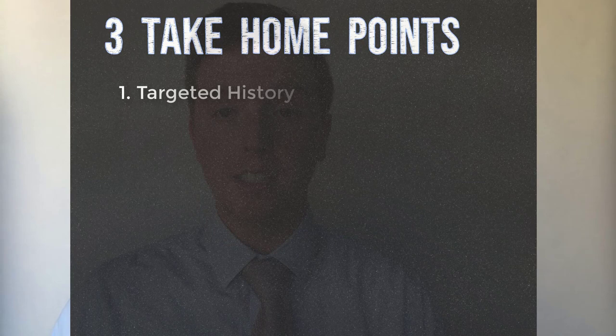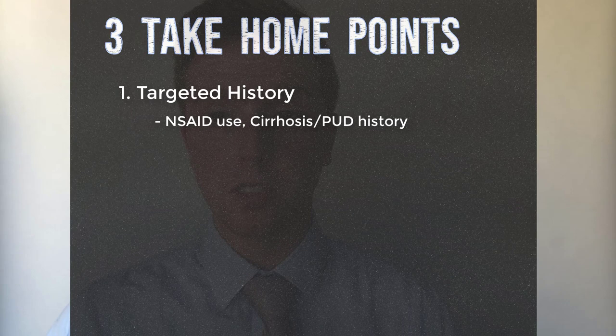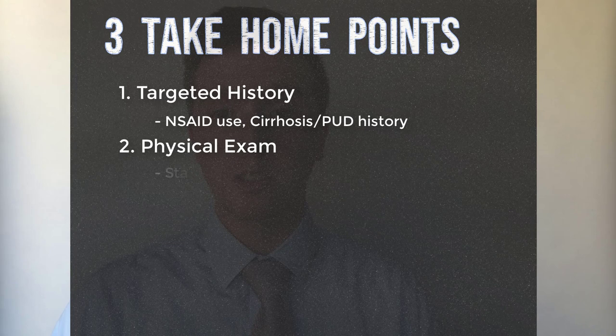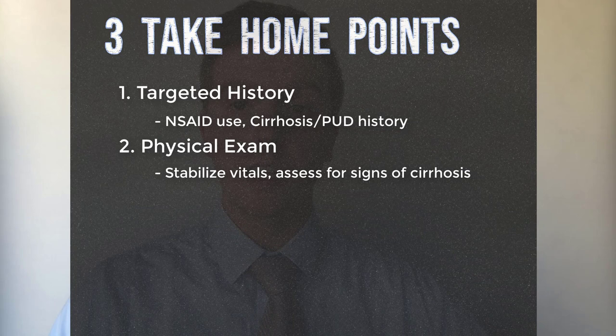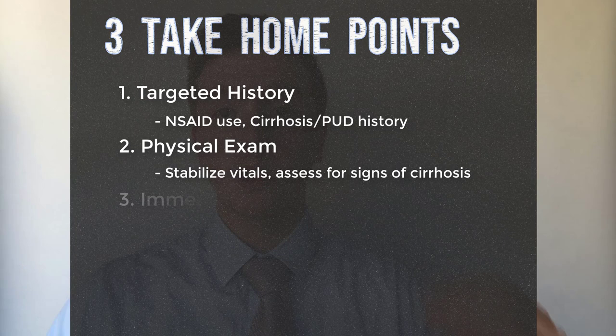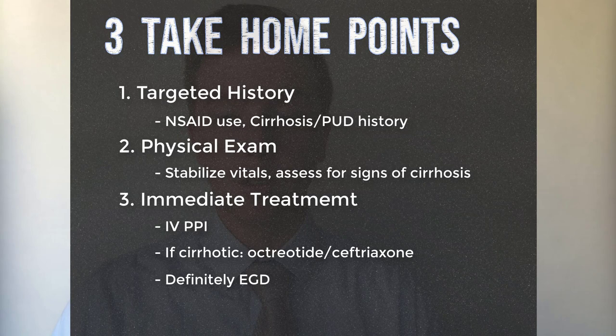In review, the three most important things to remember for upper GI bleed patients are: first, obtain a thorough history detailing any history of cirrhosis, NSAID use, or peptic ulcer disease. Second, assess physical exam findings and vital stability to determine how sick the patient is and the level of care needed. Third, regarding treatment — every patient with an upper GI bleed needs a Protonix drip or IV Protonix, and if the patient is cirrhotic, make sure they are on octreotide and ceftriaxone.